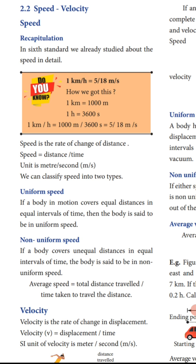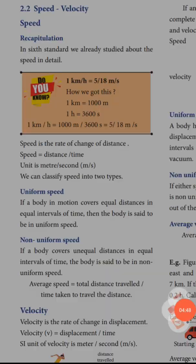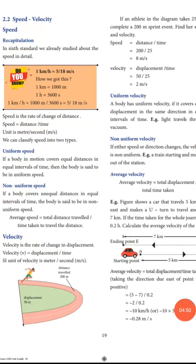Average speed equals total distance travelled divided by time taken to travel the distance. Next, velocity. Velocity means rate of change of displacement. Velocity V equals displacement divided by time. The SI unit of velocity is meter per second.